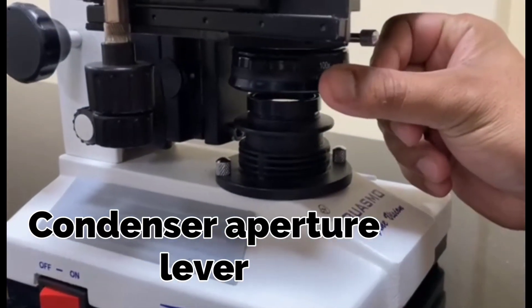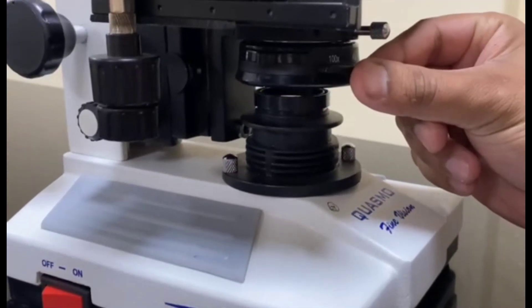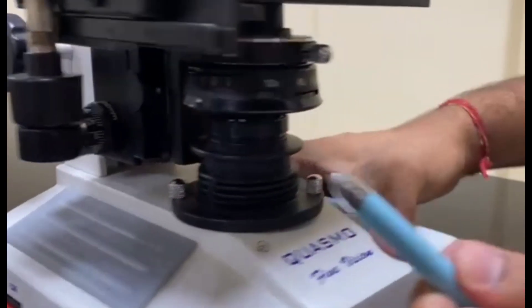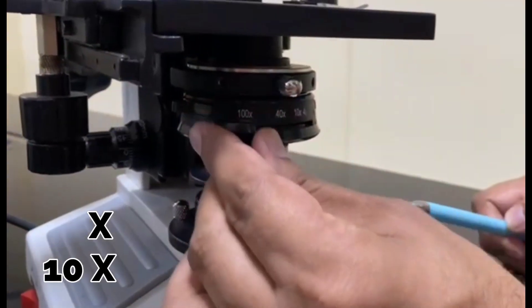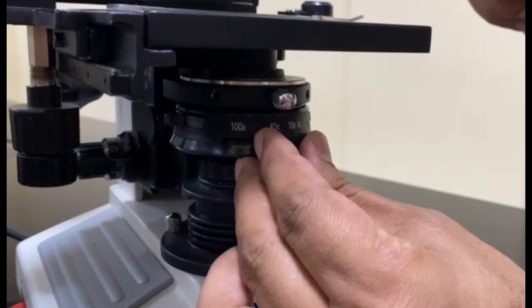Here you can see this is the condenser aperture lever that can be used to regulate the intensity of light. And here you can see that the 100x, 40x, and 10x is mentioned, you can set it accordingly.